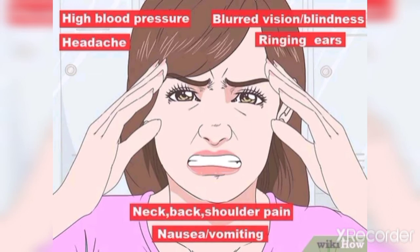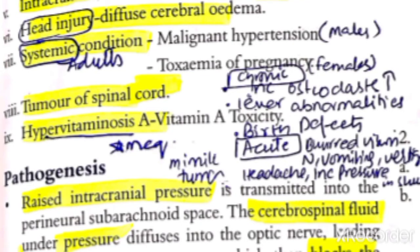Regarding hypervitaminosis A: the patient has acute vitamin A toxicity, taking more than the body needs, and presents with headache. There is raised pressure inside the skull due to vitamin A, making it seem like the patient has a brain tumor — but it is not a tumor.